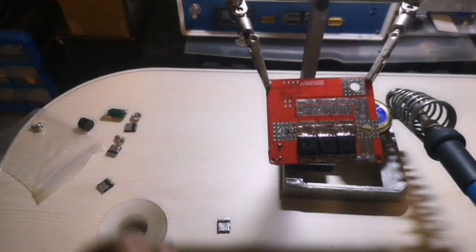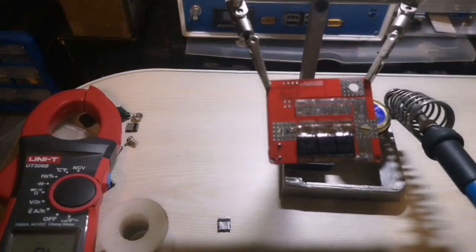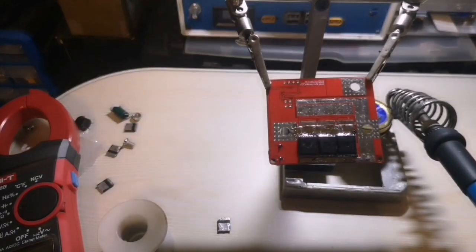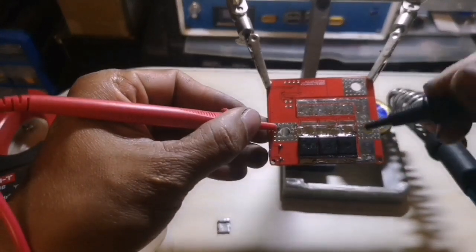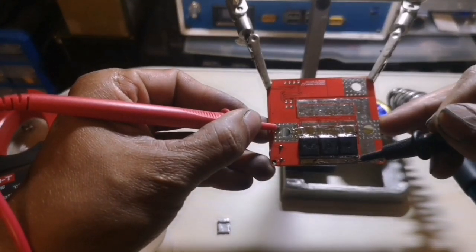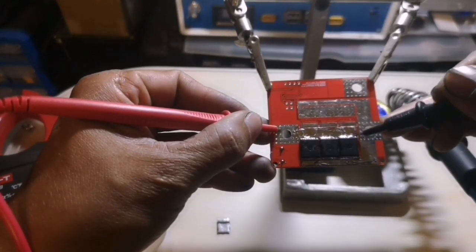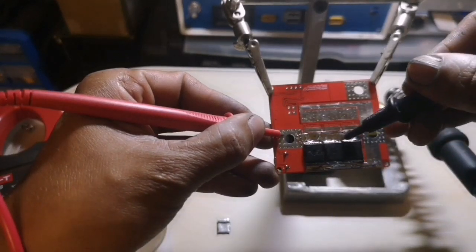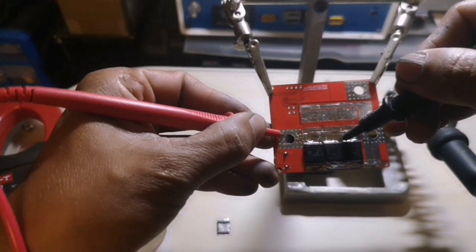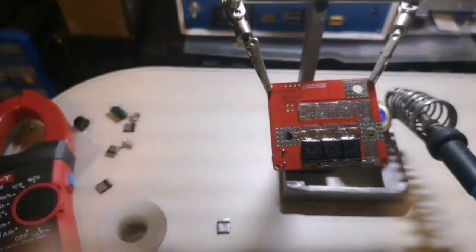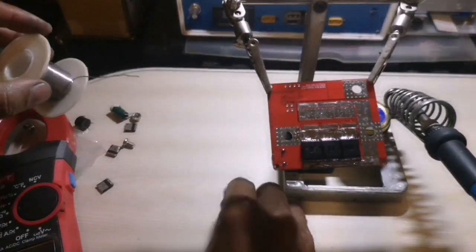And this is how you check, guys, using the multimeter. Put your positive to that one, then point out to the traces. If there's any beeping, that means short. If there's no beeping, you didn't hear anything, it means no short. So let's continue, guys.